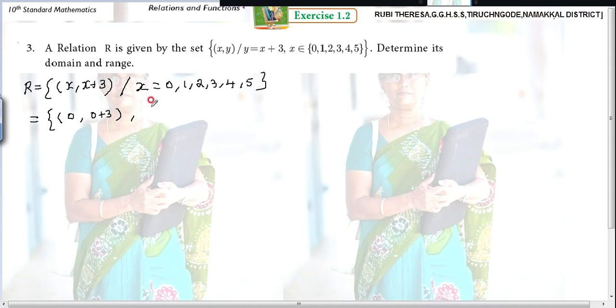Next one is 1 comma 1 plus 3. Then 2 comma 2 plus 3, 3 comma 3 plus 3, 4 comma 4 plus 3, and 5 comma 5 plus 3.